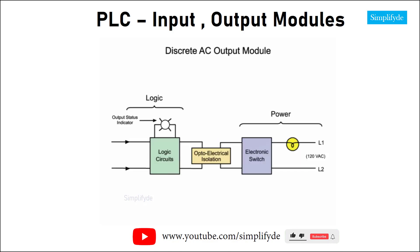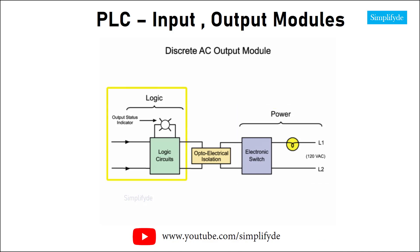For the AC output module, the circuit is comprised of a power section and logic section coupled by an isolation circuit similar to the input module but in reverse order.